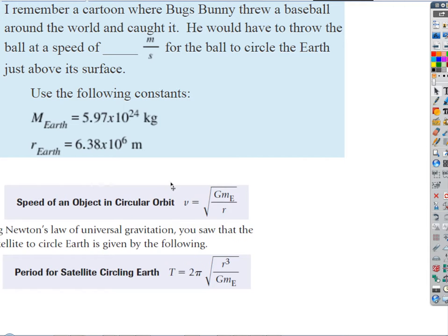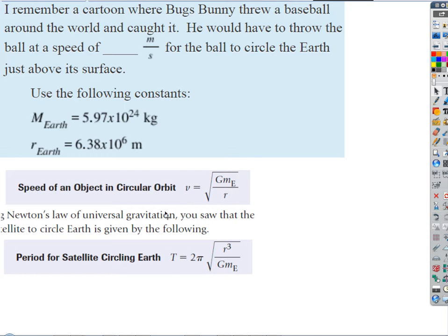For this problem, the radius of the orbit is just the Earth's radius, since the baseball is right at the surface. We know the mass of the Earth. We'll use the orbital speed equation: v = √(GM/R). We plug in G = 6.67 × 10⁻¹¹, the mass of the Earth, and the radius of the Earth.